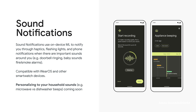Sound Notifications uses on-device machine learning to notify you through haptics, flashing lights, and phone notifications when there are important sounds around you — for example, smoke alarms, sirens, baby sounds. You can be notified with a flashing light or a vibration on your mobile device or a wearable. The timeline view lets you go back in history and see what has been happening around you. What's new is personalized sound detection: you can customize and train to your specific household sounds, for example distinguishing your microwave beeping from your dishwasher beeping.